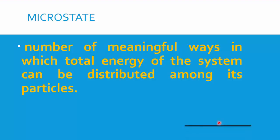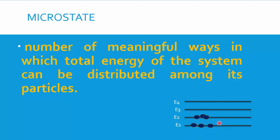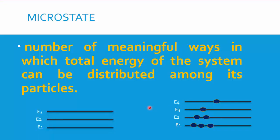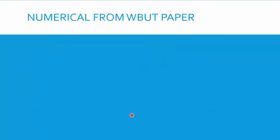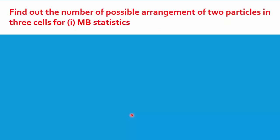Now, what is microstate? Microstate states that for a given macrostate — suppose you have a certain number of particles in energy levels E1, E2, E3, E4 — and you want to distribute or place these particles in different energy levels, the number of ways you can place these particles in the energy levels is called microstate. For example, you can distribute as three, two, one, one or as two, three, one, one — these different meaningful distributions are the microstates.